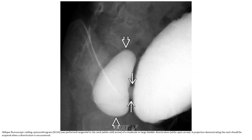Fluoroscopic voiding cystourethrogram (VCUG) was performed with attention to the necks of a moderate to large bladder diverticulum. A projection demonstrating the necks should be acquired when a diverticulum is encountered.